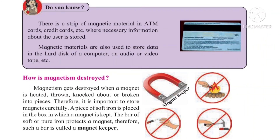How is magnetism destroyed? Magnetism is destroyed when a magnet is heated or burned. It is also destroyed if the magnet is knocked about, dropped roughly, or broken into very small pieces. Therefore, it is important to store magnets carefully. A piece of soft iron is placed in the box where the magnet is kept — this protects the magnet and is called a magnet keeper.